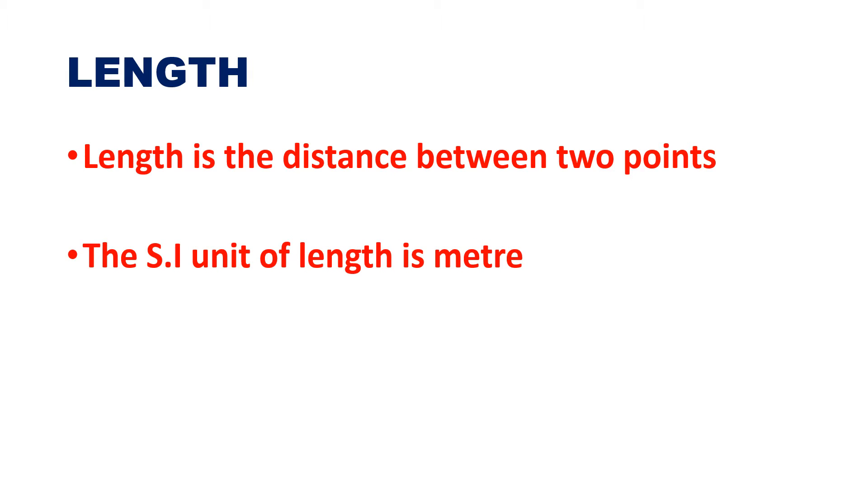Now we have the SI unit of length is metre. There are bigger units also like kilometre. Then if you want to take the distance between heavenly bodies, you will take astronomical unit, that is a big unit. Then light year, this is a unit of length. Then smaller units are there like millimetre, centimetre, micrometre, nanometre.